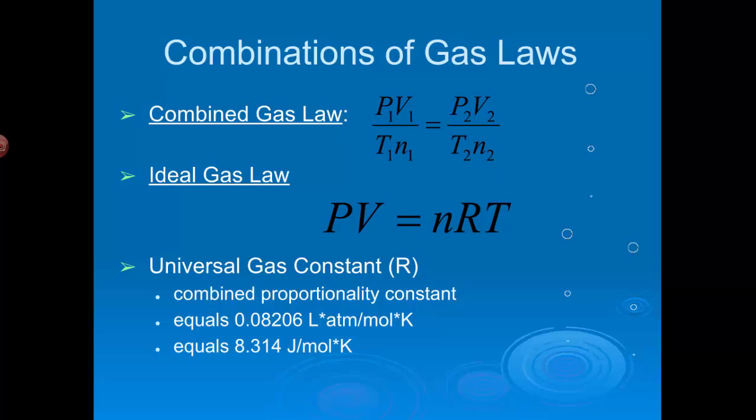R is a proportionality constant. If you take PV over NT for a situation that we are aware of, like molar volume, for example - one mole of any gas at standard temperature and pressure equals 22.4 liters. In that sentence, you will hear moles, temperature, pressure, and volume. And if I put all of those together in this relationship, PV over TN, I get this proportionality constant: 0.08206 if your pressure is measured in atmospheres, and 8.314 if it's measured in kPa or if you want to work in joules. And so we'll see that the gas law constant is also going to be used when we're talking about energy, like kinetic energy.